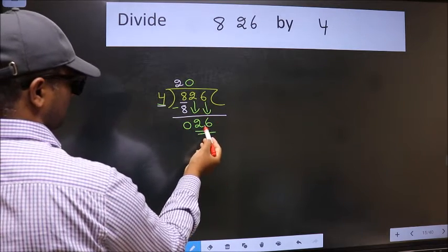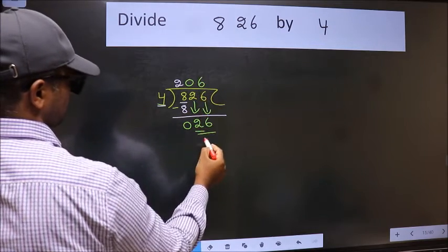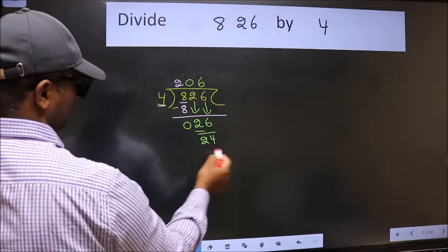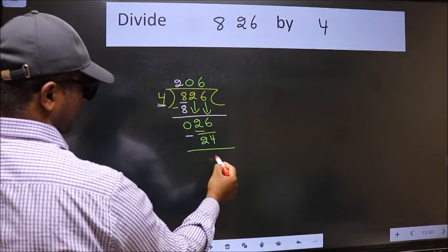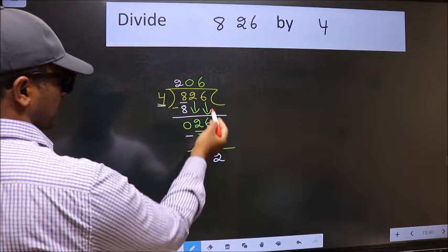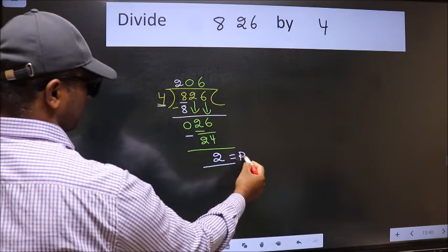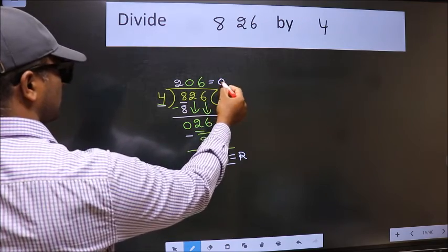Now 26. A number close to 26 in the 4 table is 4 times 6 equals 24. Now we should subtract. We get 2. No more numbers to bring down, so we stop here. This is our remainder and this is our quotient.